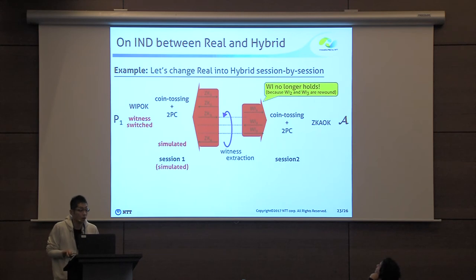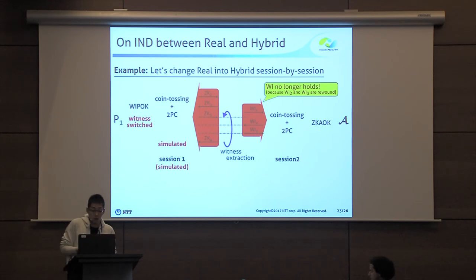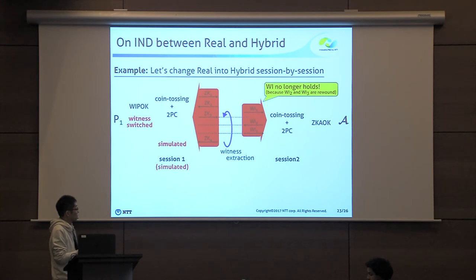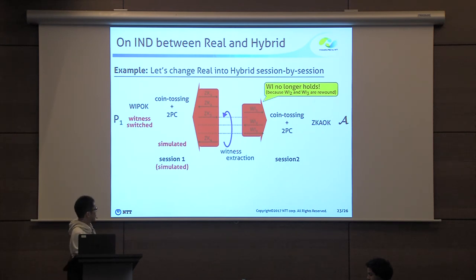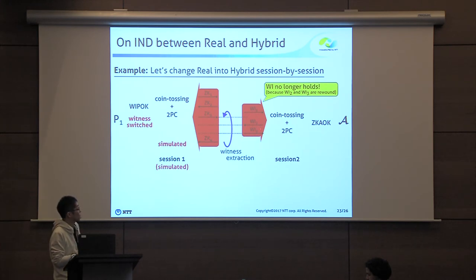However, a problem occurs when we try to simulate session two. In particular, when we rewind the zero-knowledge argument in session one, the WI proof in session two is also rewound, because they are executing in a concurrent way. Because of this rewinding, we can no longer use the witness indistinguishability property of the WI proof.